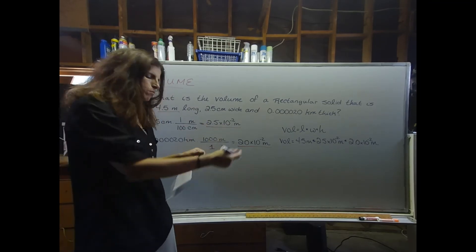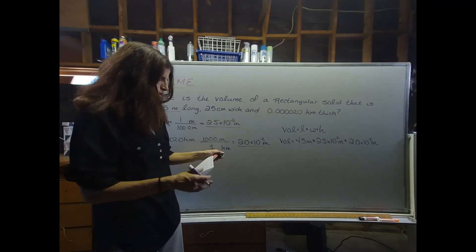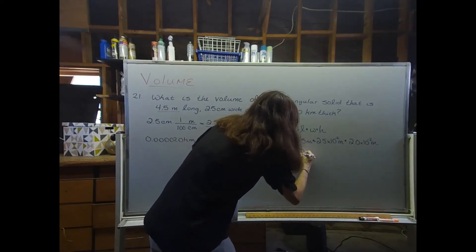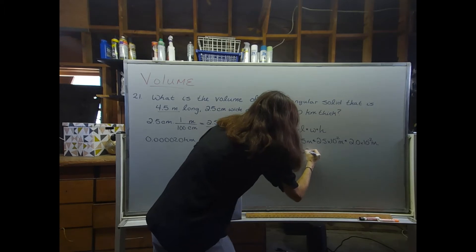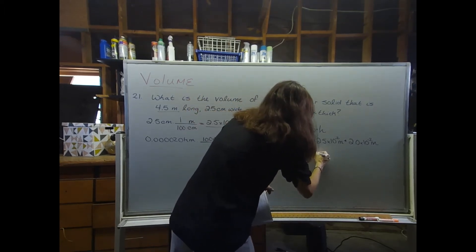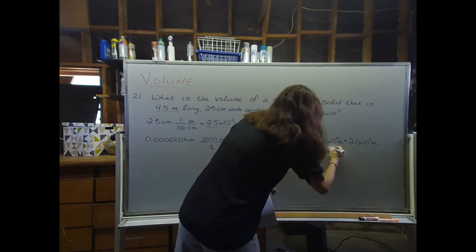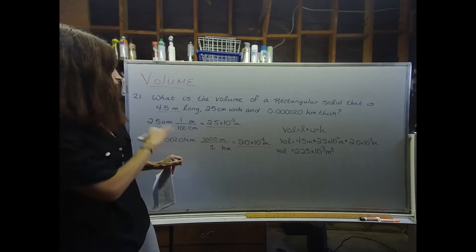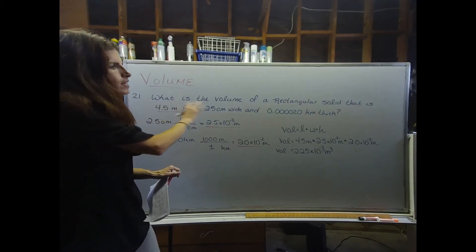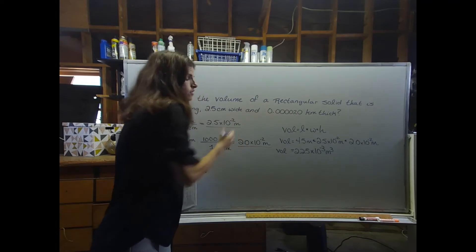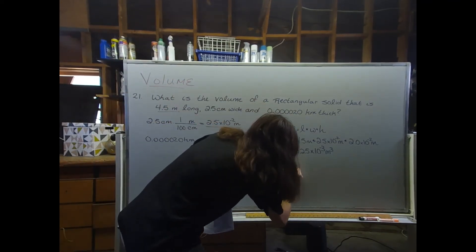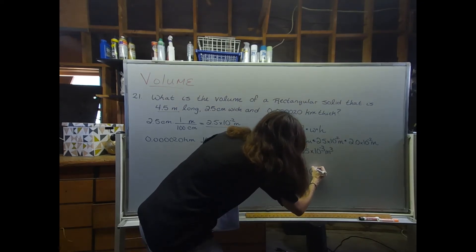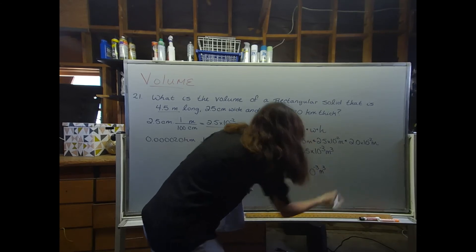We have meters times meters times meters, so our final units are going to be meters cubed. When I did this, I got 2.25 times 10 to the negative third meters cubed. The only problem with that number is at no point were we given three sig figs. Everything has two sig figs, including this number. So I'm going to report my final answer as 2.3 times 10 to the negative third meters cubed.